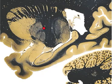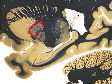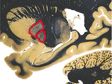And we have the globus pallidus right here — the external segment right here, and then the internal segment right there, which is also a part of the basal ganglia.